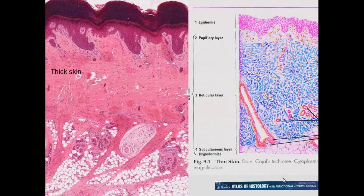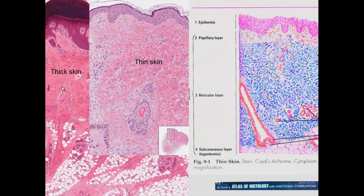We can see the epidermis on either side — this is thick skin in both cases. Where the epidermis and dermis interact is the papillary layer. The other connective tissue layer that gives the dermis its bulk and thickness is the reticular layer. Below that you have the subcutaneous fat cells. Here we can see fat cells, and through them sweat glands, as well as a Meissner's corpuscle.